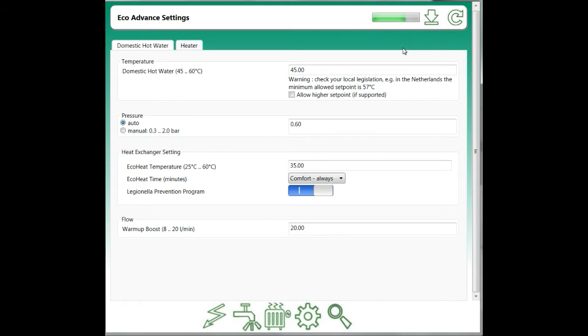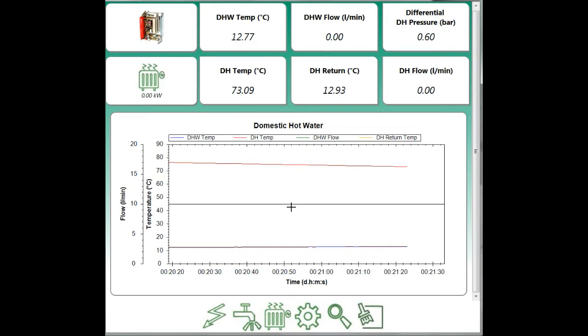We start by uploading the new settings to the data HIU. Domestic hot water is at 45 degrees C. We have the keep warm temperature at 35 degrees C. Switching to the output view, we can see the data coming out of the HIU.